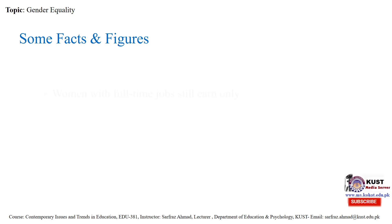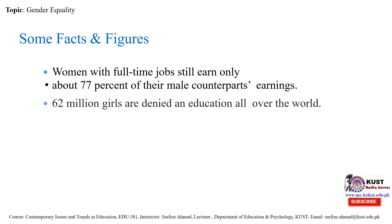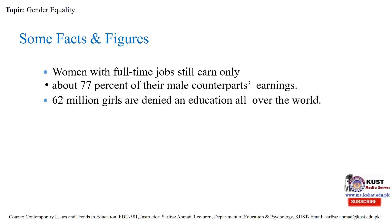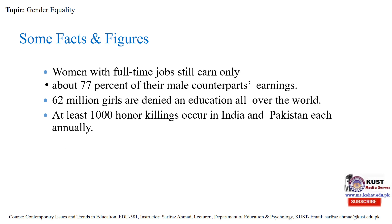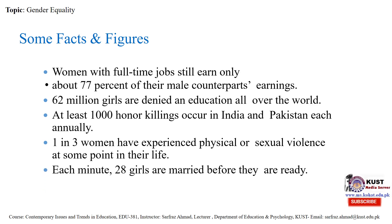Key statistics: women with full-time jobs earn only about 77% of their male counterparts. Around 62 million girls are denied an education worldwide. At least 1,000 honor killings occur in Pakistan and India each year. One in three women has experienced physical or sexual violence at some point in their lives. Each minute, 28 girls are married before they are ready.